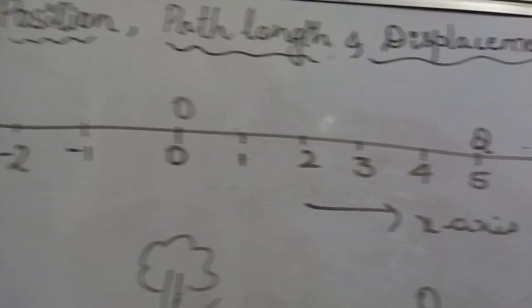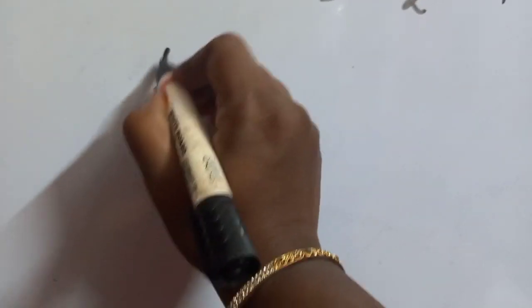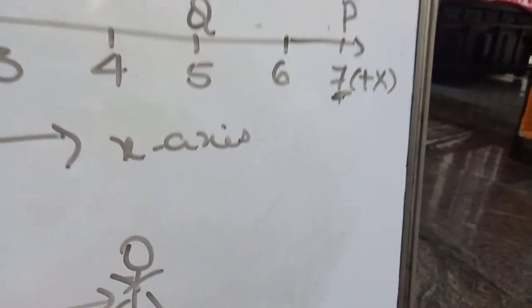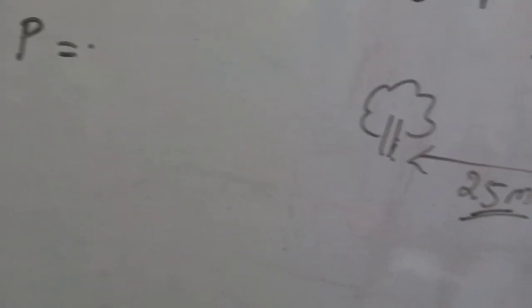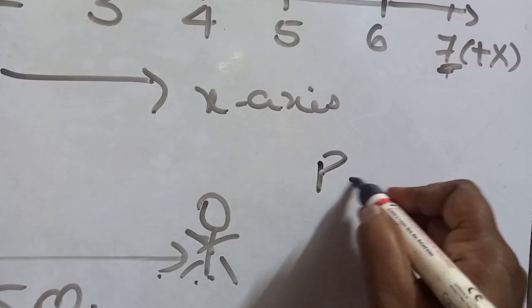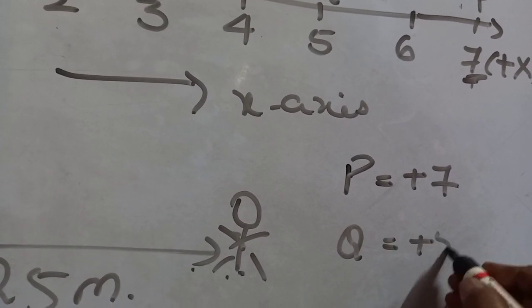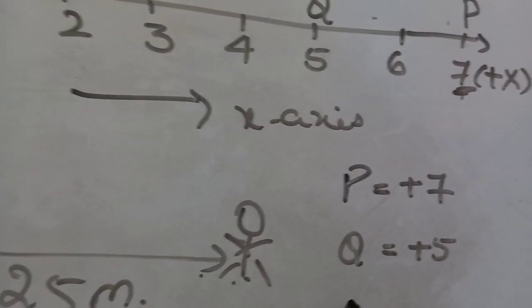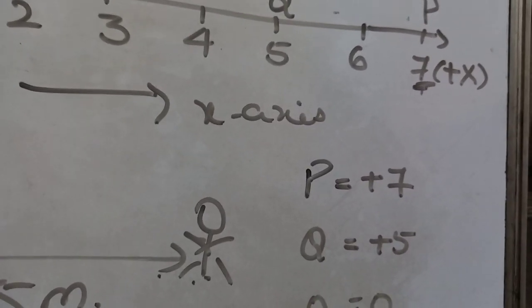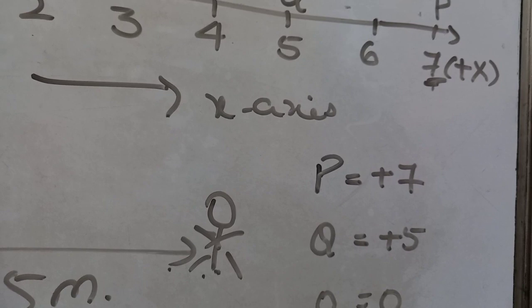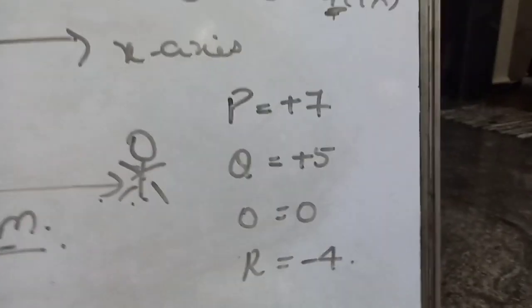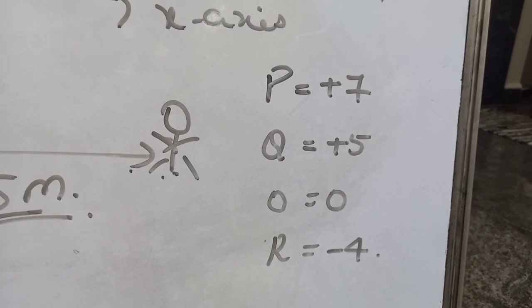Similarly, if we want to locate the positions of the points on the number line: position of P is +7, position of Q is +5, position of O is 0, and position of R is -4.